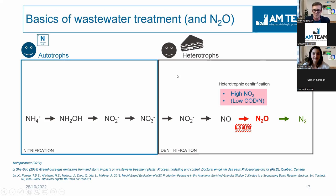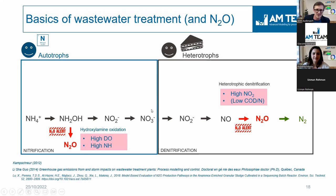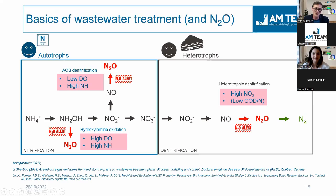If you want to denitrify, you always have to go through nitrous oxide — so it's not inherently bad. It's only bad if the heterotrophs cannot consume it to turn it into N2 in a later stage. Turning to the autotrophs, unfortunately they don't work in a straight line. These bacteria have a sidetrack depending on local conditions. Typically at very high dissolved oxygen and high ammonia, they can form N2O from an intermediate called hydroxylamine — that's one pathway. They also have a second pathway from nitrites, forming nitrous oxide under different conditions: low DO, high ammonia.